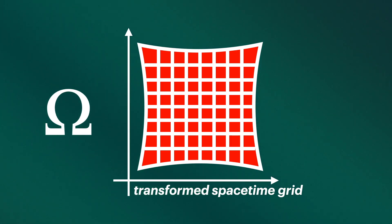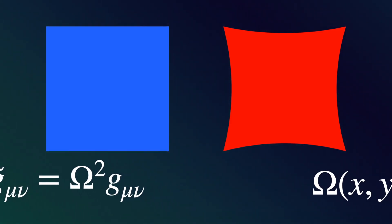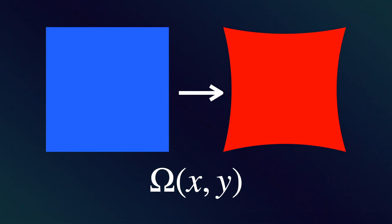The red figure shows the same grid after applying the scaling function omega. Notice how the points are no longer uniformly spaced. They are denser near the center and more spread out as we move away. This transformation represents a conformal transformation of the space-time metric. The new g_μν is omega squared of the previous g_μν. The scaling function omega(x,y) modifies the space-time metric, simulating the expansion effect in CCC.